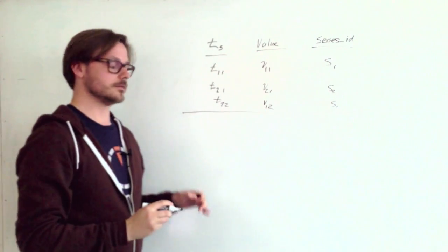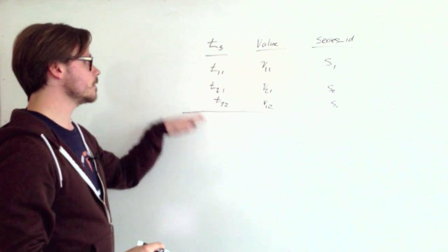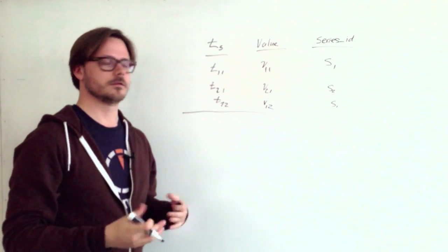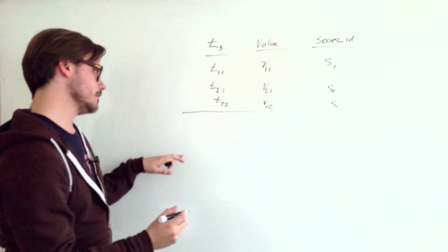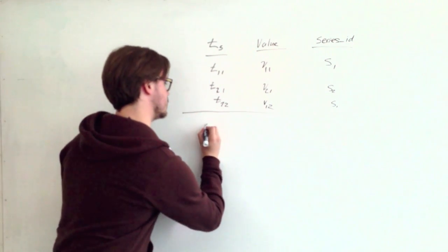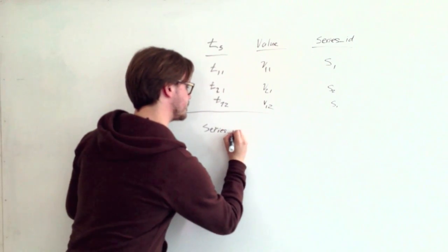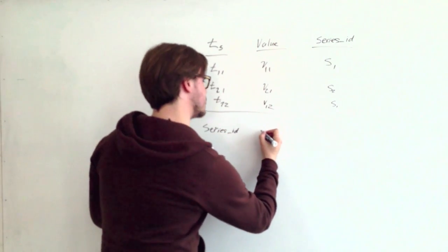So one way you can alleviate that is by a slight optimization. Again, you can use a single table, but instead of storing one data point per row, you can store a full day's worth. So this table layout has some sort of series identifier, and the second column is a date.